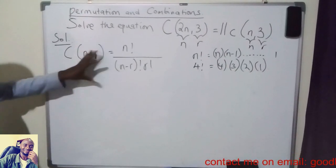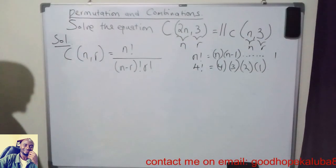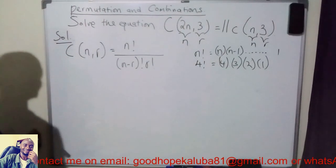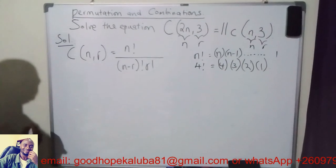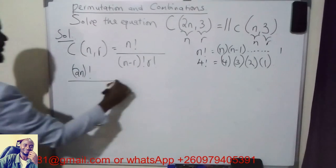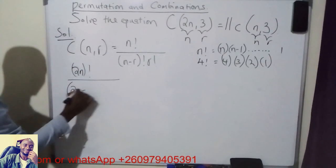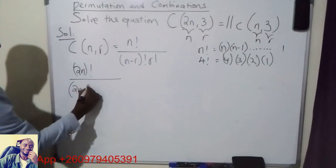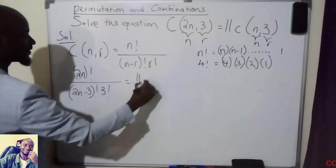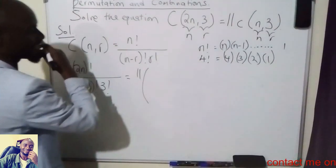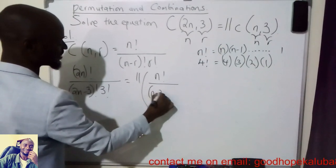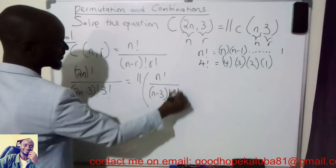So I'm going to apply this formula to the two parts of the equation. In our first case, n is equal to 2n and r is equal to 3. So the combination of 2n items taking 3 at a time would be 2n factorial all over (2n minus 3) factorial times 3 factorial, and this is equal to 11 times the combination of n items taking 3 at a time, which is n factorial over (n minus 3) factorial times 3 factorial.